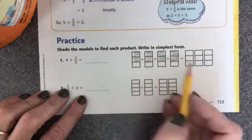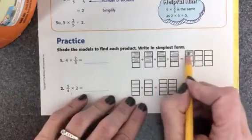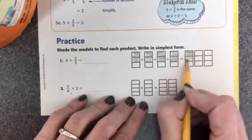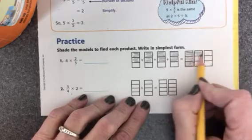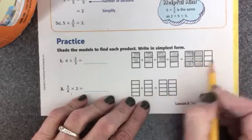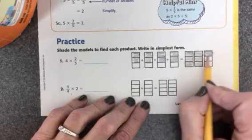One, two, three, four, five, six, seven, eight. And I need to shade in eight blocks over here. One, two, three. This is a whole. Four, five, six. This is a whole. Seven and eight.